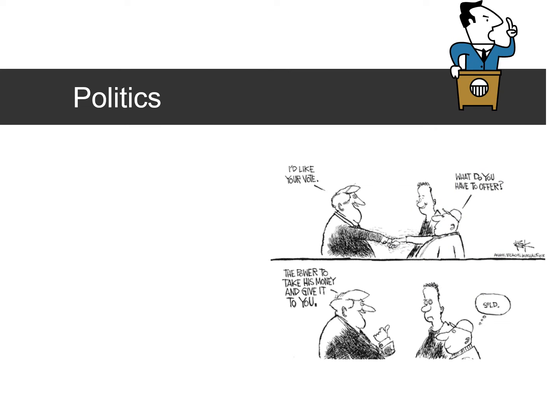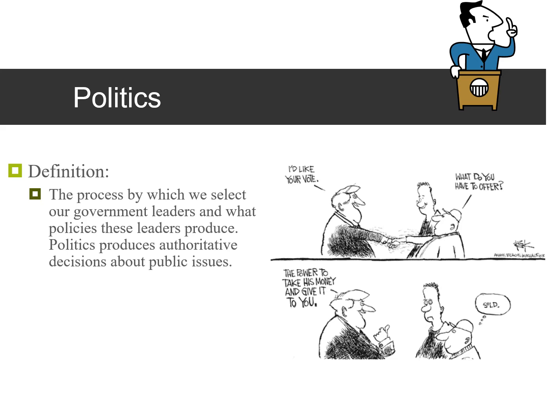In politics — what is politics? The definition is the process by which we select our government leaders and what policies these leaders produce. So politics produces authoritative decisions about public issues.